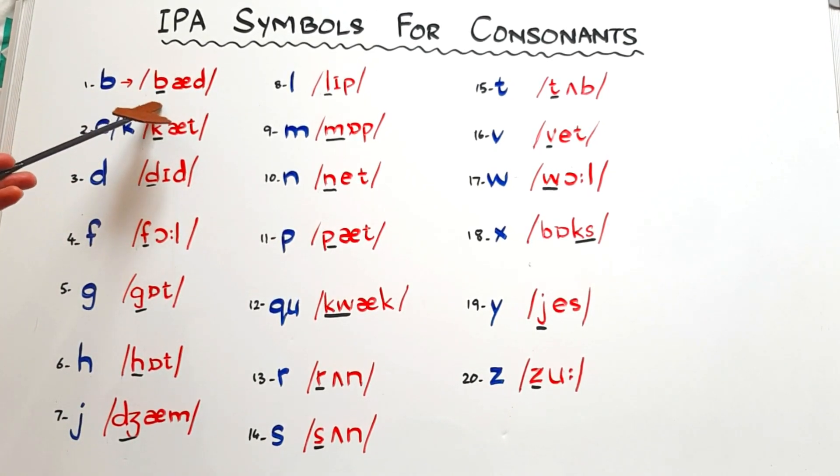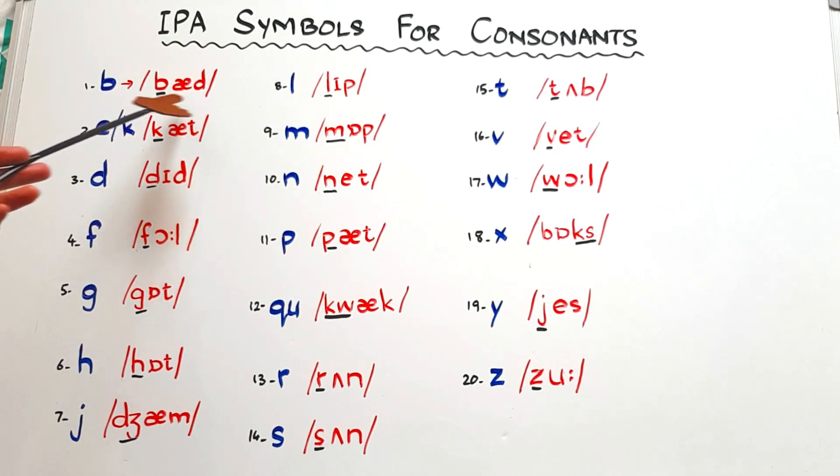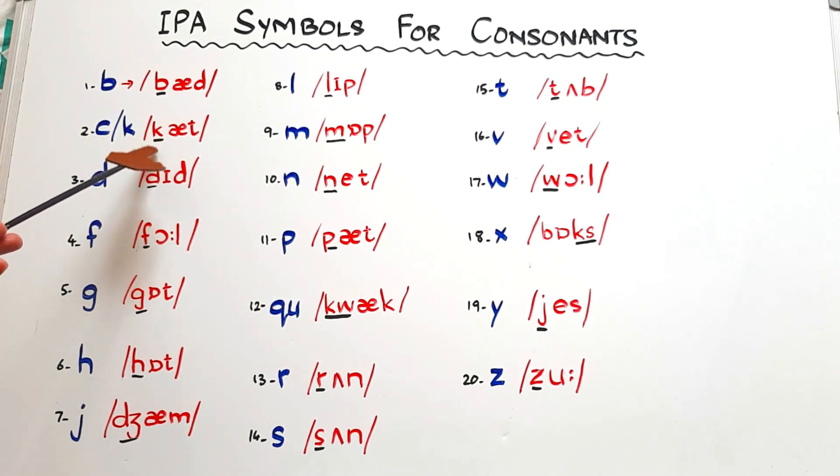It's something quite simple. The IPA symbol for letter B is simply the lowercase b. The word that is written is B-A-D, 'bad'. This is the short A symbol. C and K both have the same symbol - that is letter K - because C can also say the K sound. So whenever the word is pronouncing the K sound, we need to write it with letter K. K-A-T, 'cat', again the short A sound.